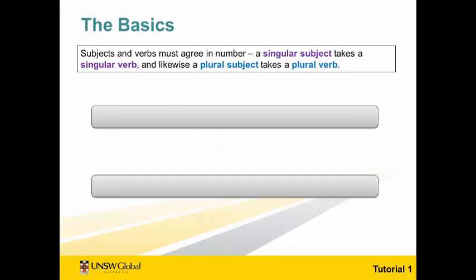Let's take a look at the first rule. Subjects and verbs must agree in number. A singular subject takes a singular verb. And likewise, a plural subject takes a plural verb. But what does this mean? Let's look at an example.